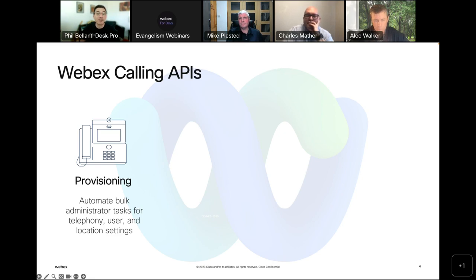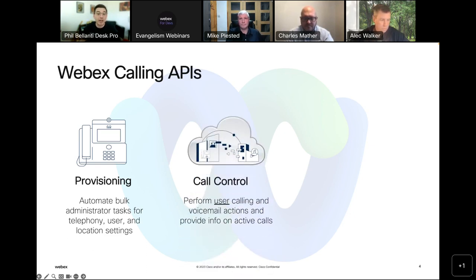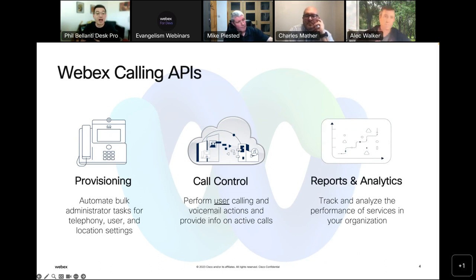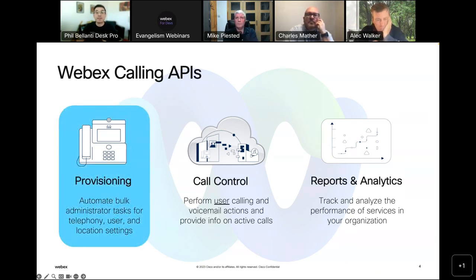Then during the call, we have call control APIs for user-based actions — getting information during calls and automating those things from the end user perspective. And then after the calls are made, the reporting and analytics APIs provide call data for administrators to generate reports. There have been a lot of recent updates for these APIs as well — call detail records are now available five minutes after calls are completed. But again, today the focus of this webinar is going to be the provisioning APIs, which have probably seen the most improvements over the last 18 months.